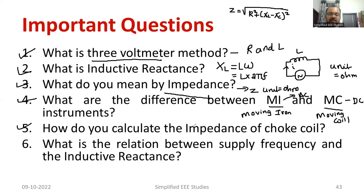How do you calculate impedance of a choke coil? We are supposed to follow three voltmeter method. In that there is a formula. Please refer the experiment. Impedance can be written as Z is equal to V3 divided by I, where V3 is the third voltmeter, where I is the current.